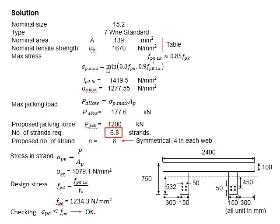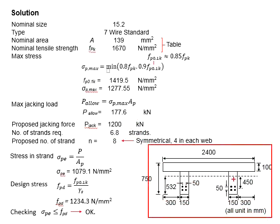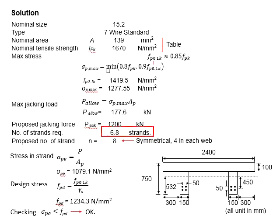You need to round up the number to a whole unit, which gives 7 strands. However, based on the section shown here, it is good practice to arrange the tendons symmetrically. Seven strands is an odd number, so you can go for 8 strands instead. With that, you will have 4 strands on each web.